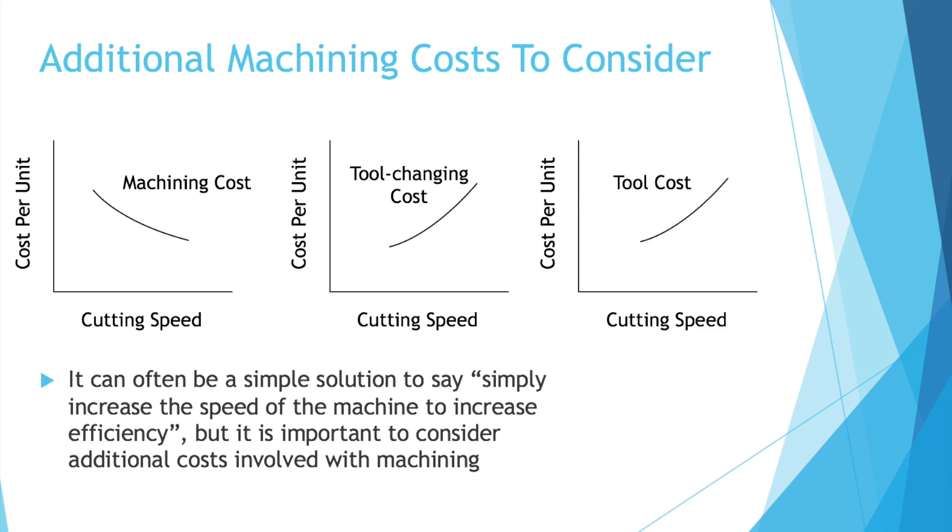So it's a simple solution to just say, hey, run the machine faster will increase production, but consider these additional costs as well.